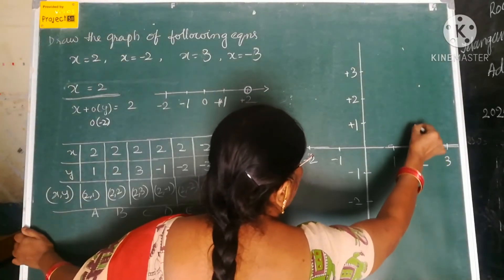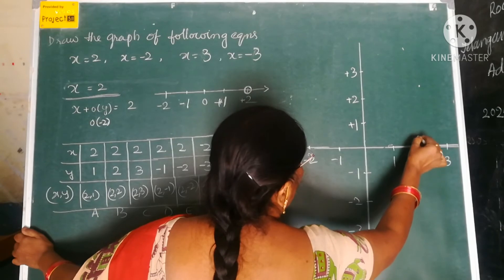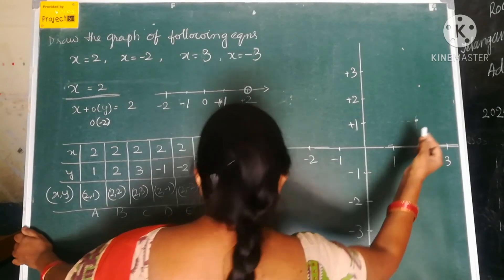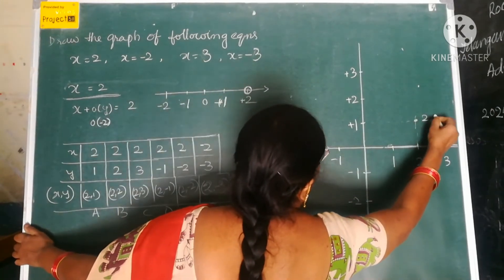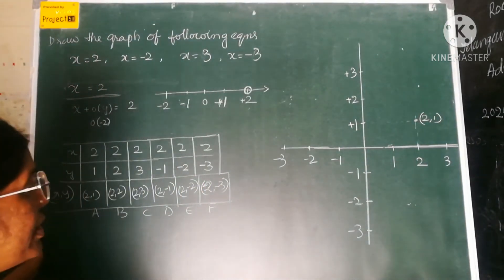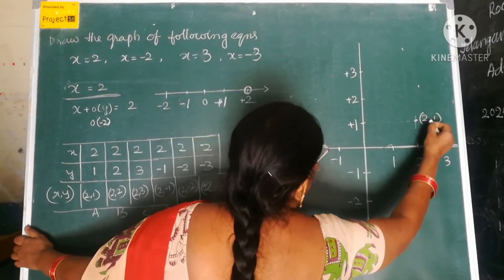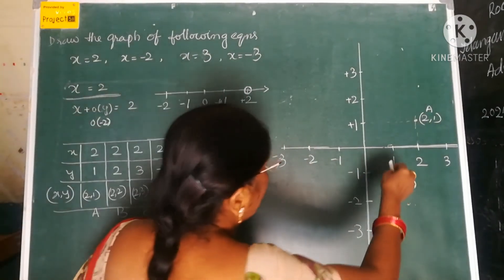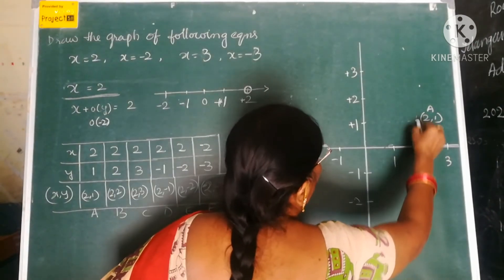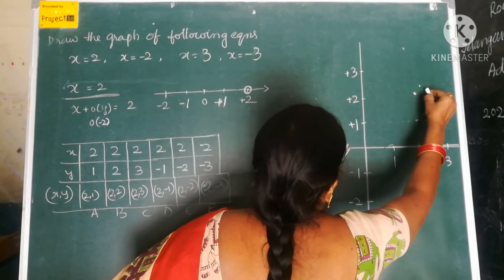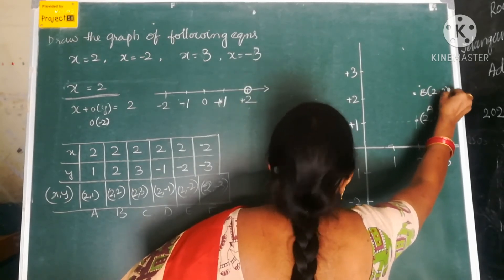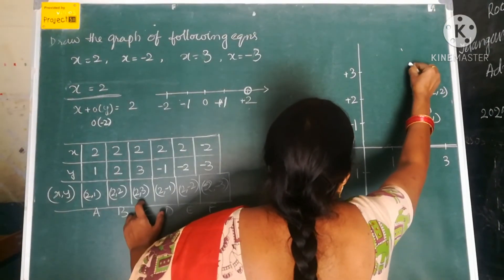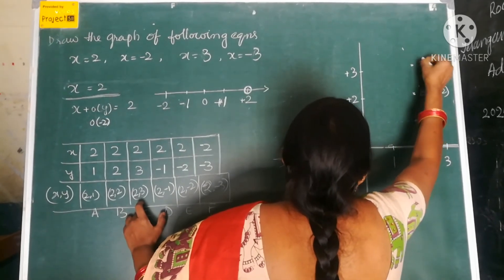We can plot point A here — on the x-axis it is 2, and on the y-axis it is 1. The intersecting point gives us A at (2, 1). The second point B is (2, 2): on the x-axis it is 2 and on the y-axis it is 2. And point C is (2, 3), plotted here.